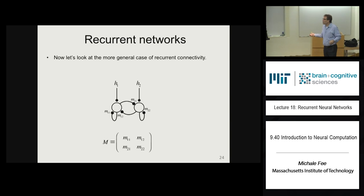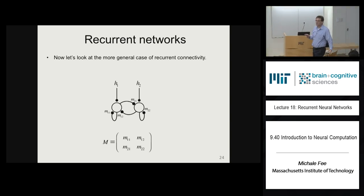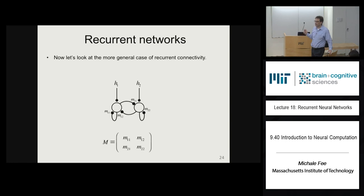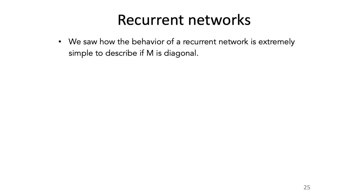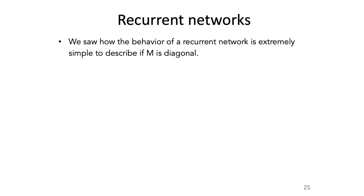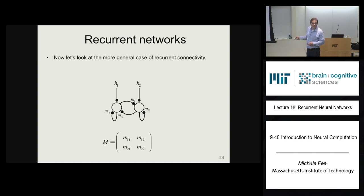We're going to consider the simplest case of this fully recurrent network where the connections are symmetric — a connection from V1 to V2 equals the connection from V2 to V1. We do this because it builds our intuition and is mathematically simpler than the fully general case. We saw the behavior is very simple when M is diagonal, so we're going to take this arbitrary symmetric matrix M and just make it diagonal.